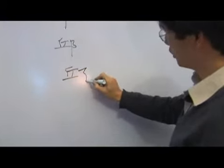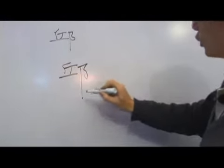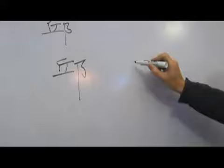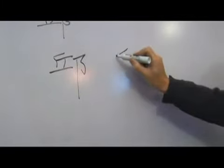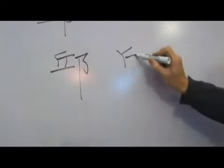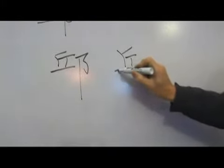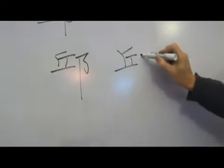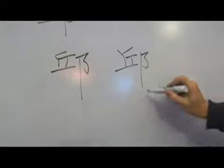Continuing the strokes: 撇 (left-falling), 彎鉤 (curved hook), 樹 (vertical) — and the completed character is 丘.